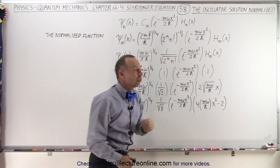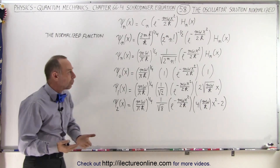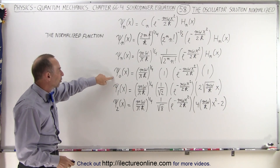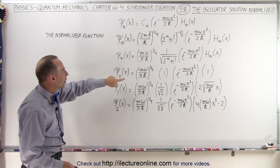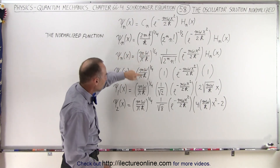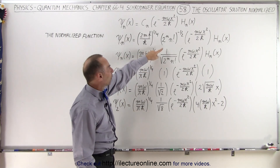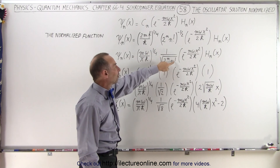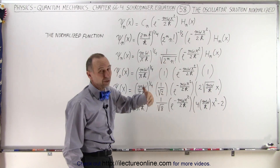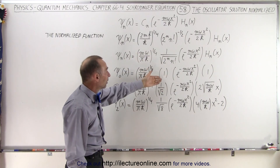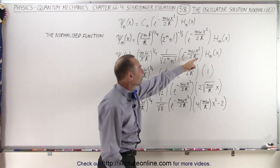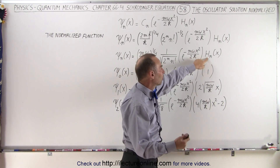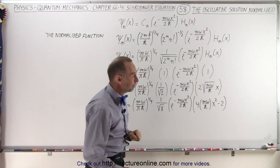The rest looks exactly the same. Now we'll show what the equation looks like for the first three quantum states. For the zero quantum state, the leading normalization factor stays the same. Here we have 1 over 2 to the zero power times 0 factorial, which is simply 1, so 1 divided by 1 is 1. We still have the same exponential function, and the Hermitian operator for the zero quantum state equals 1.